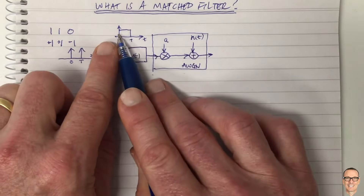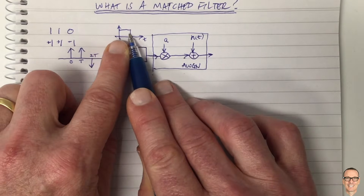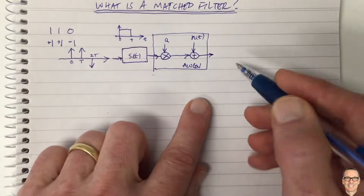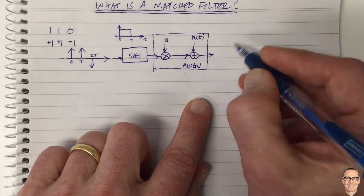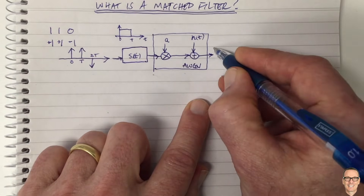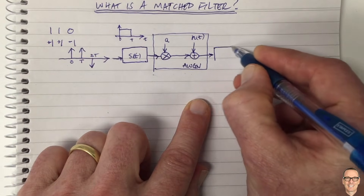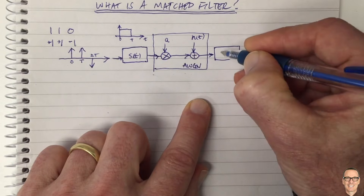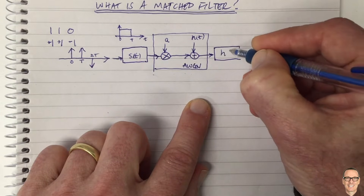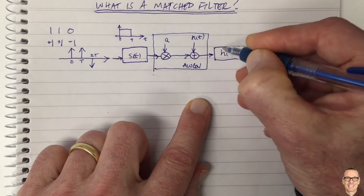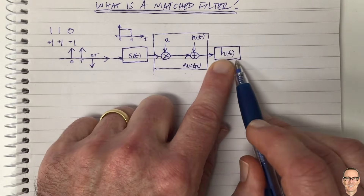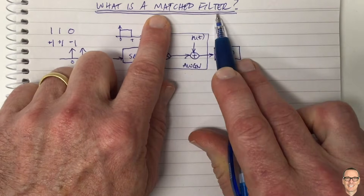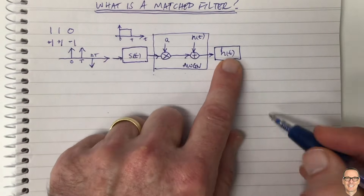The answer is we need to collect up all the energy between zero and T. How do you collect up energy? You need a filter. The question is: what should be the impulse response of this filter — what should H(t) be? We're going to show that it should be a matched filter and explain what that means.